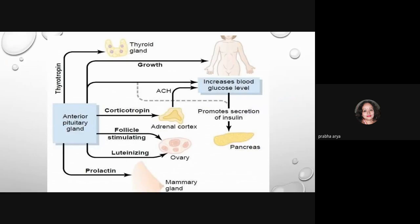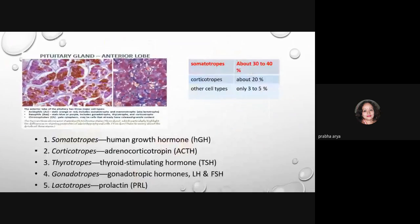For example, growth hormone stimulates the release of growth factors at local tissues, and these growth factors then cause the growth of those specific tissues. Human growth hormone is released from somatotropes, while corticotropes release adrenocorticotropin, and thyrotropes release thyroid-stimulating hormone. Somatotropes constitute about 30 to 40 percent of the anterior pituitary, while corticotropes are only 20 percent and other cell types are only 3 to 5 percent, showing that growth hormone is of utmost importance.